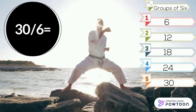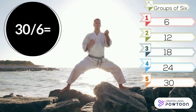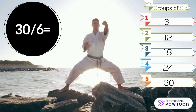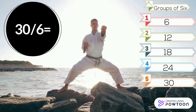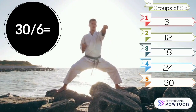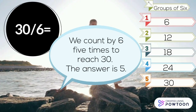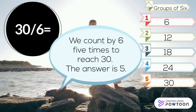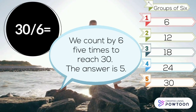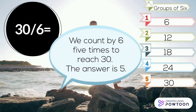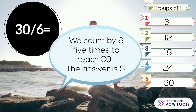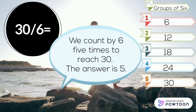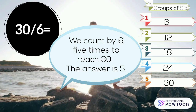30 divided by 6. Look at the groups of 6 again. We count by 6 five times to reach 30. The answer is 5.